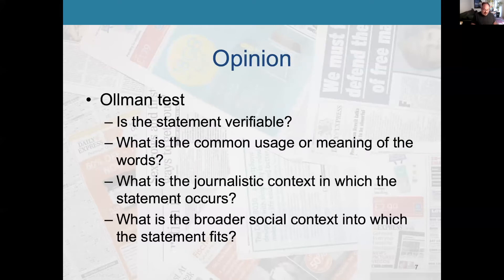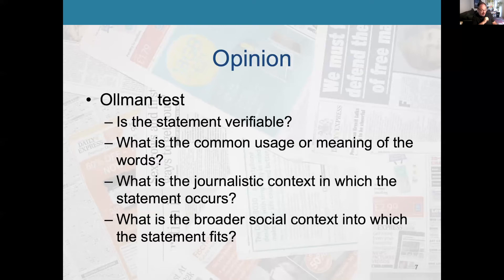When it comes to opinion, we have something called the Ollman test. These are the questions the court looks at to determine if something is opinion or fact. In 1978, after having his offer of chairmanship of the government department at the University of Maryland College Park rescinded, Ollman sued columnists Robert Novak and Roland Evans. Novak and Evans were columnists writing for a publication. He said they libeled him — they quoted some other professors anonymously who said Ollman was a Marxist and that he indoctrinates students. Ollman lost this prestigious job. He sued for libel, and the courts found that what Novak and Evans had written in their column was in fact an opinion, so they could not be held responsible for libel.